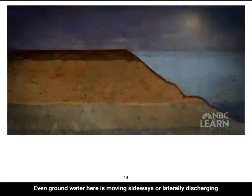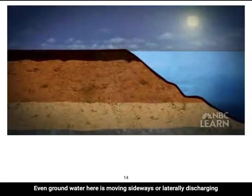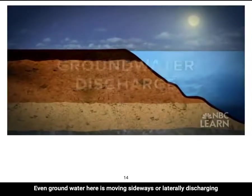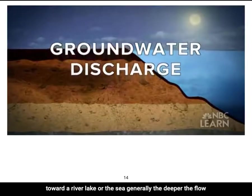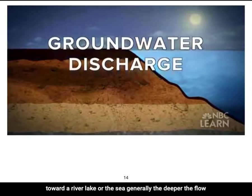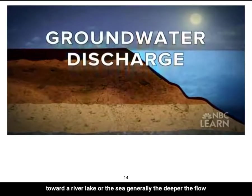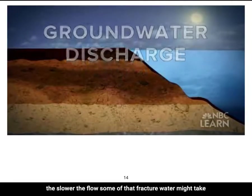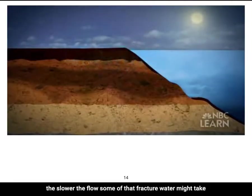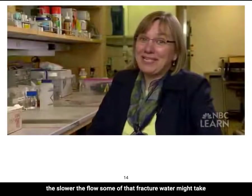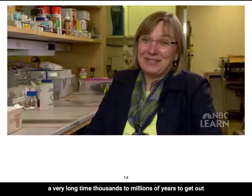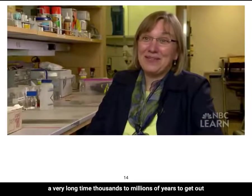Even groundwater is moving sideways or laterally, discharging toward a river, lake, or the sea. Generally, the deeper the flow, the slower the flow. Some of that water might take a very long time — thousands to millions of years — to get out.